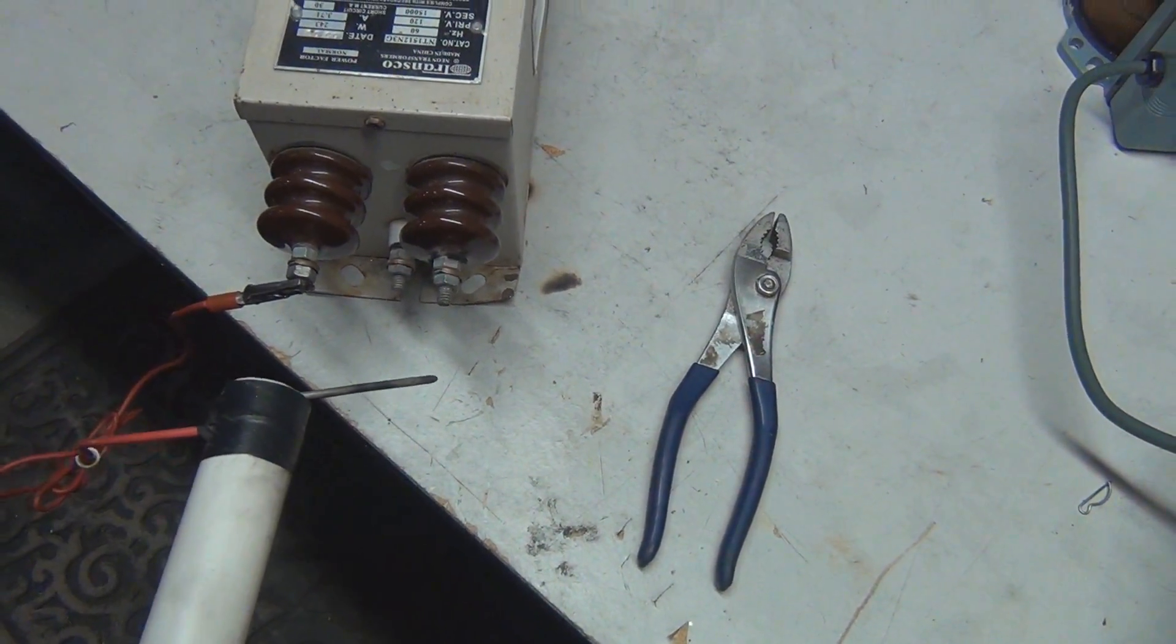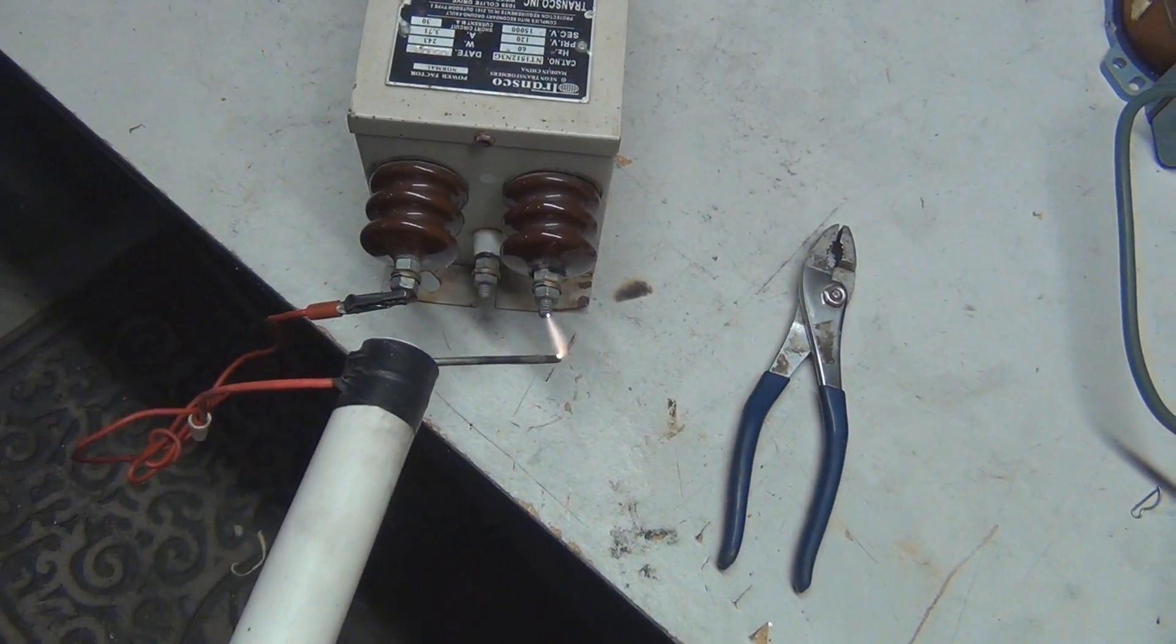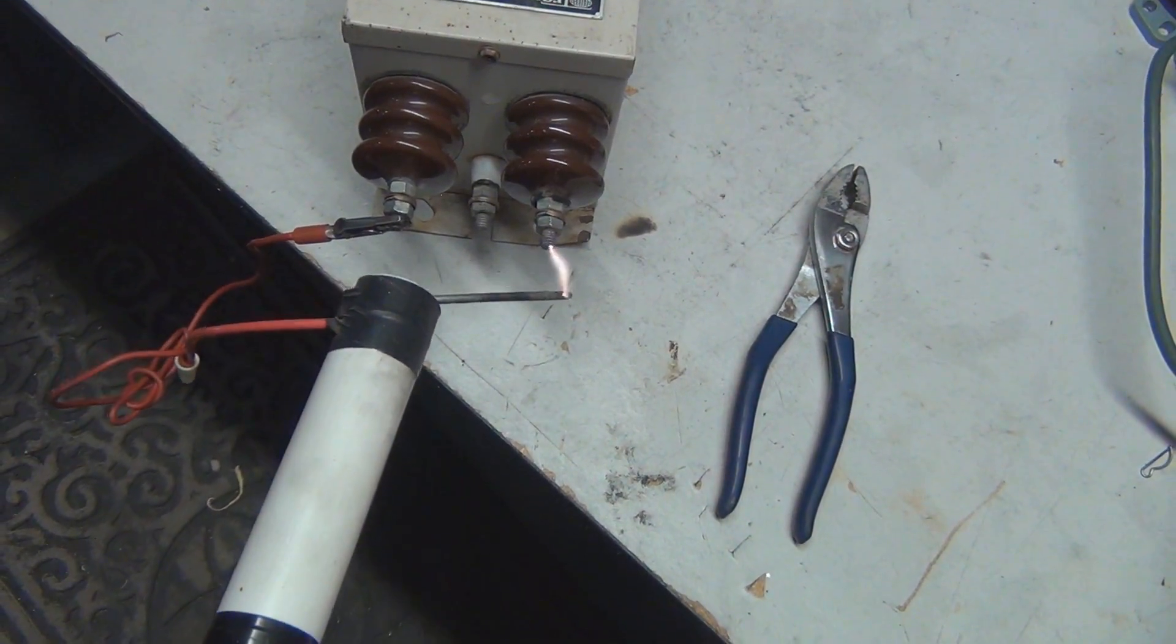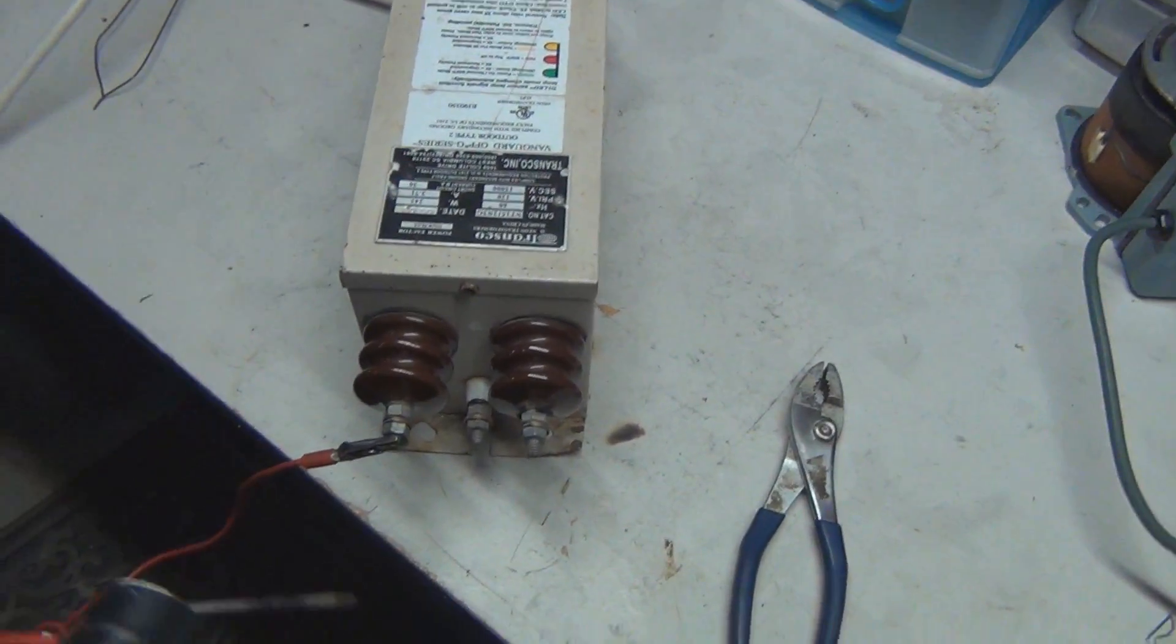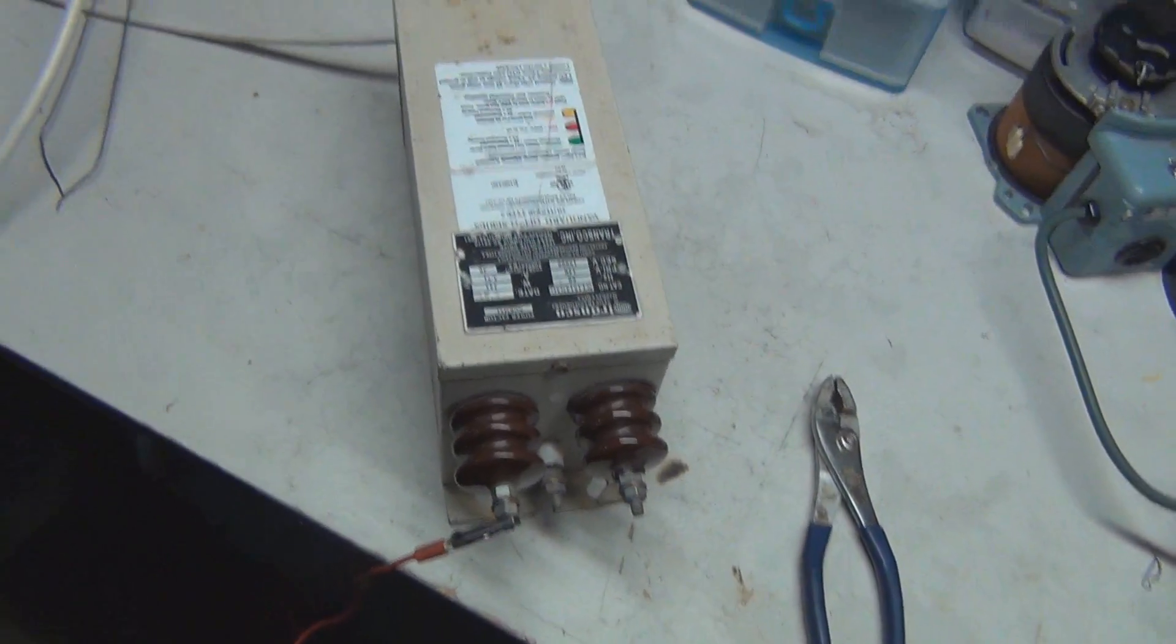You can get them on eBay, online, old neon sign shops, you can get them at wherever. A lot of times they can get pretty pricey, especially with old ones like this. But yeah, they're pretty nice units actually.